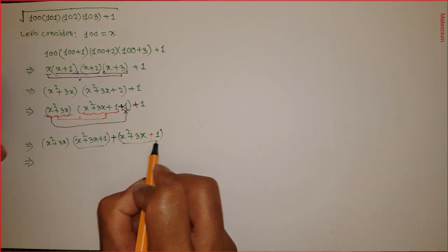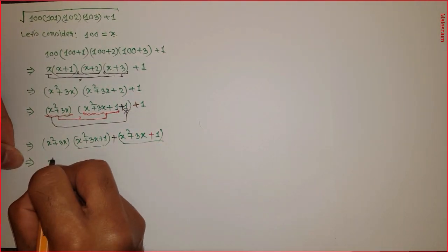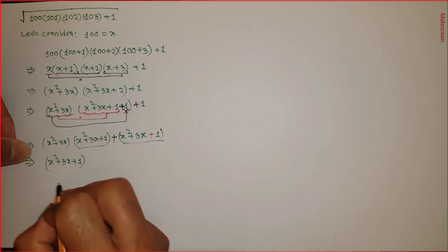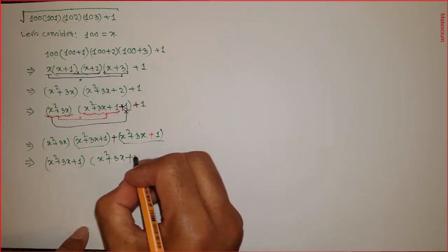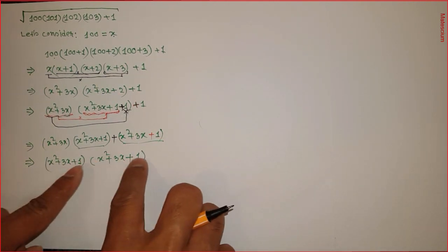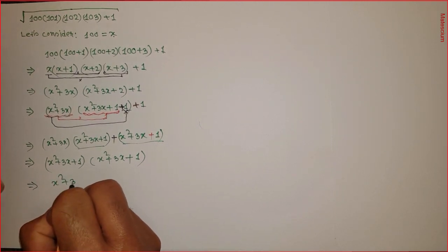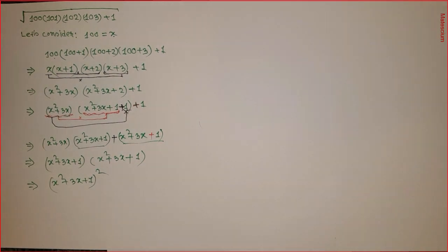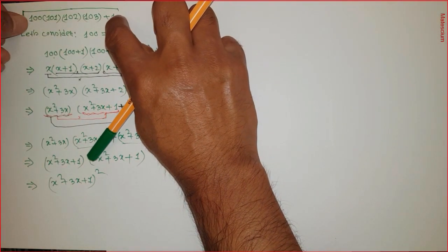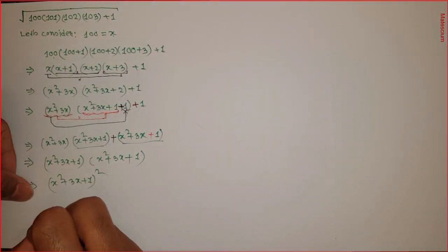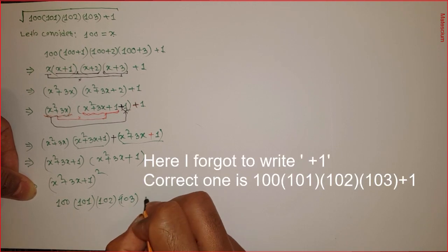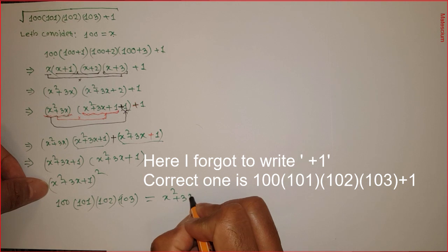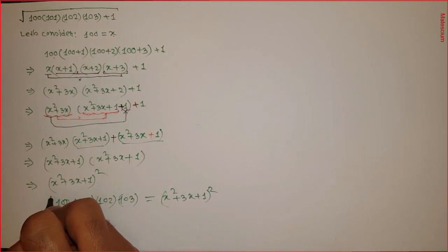Look here — these two expressions are the same, so I can take x squared plus 3x plus 1 as a common factor. The remaining part is also x squared plus 3x plus 1, and since they are the same and multiplied by each other, I can write this as x squared plus 3x plus 1, whole squared. This mathematical term becomes a simplified perfect square, so the expression under the square root equals that square.